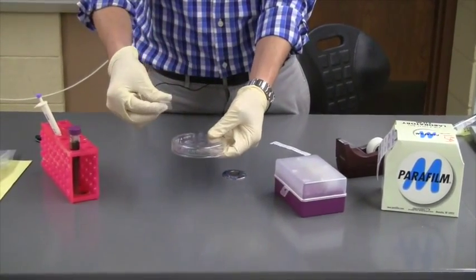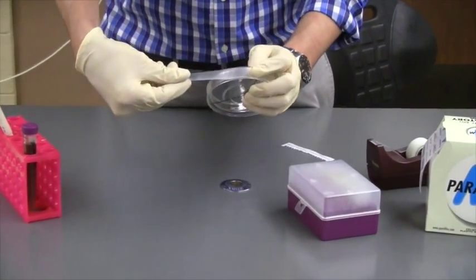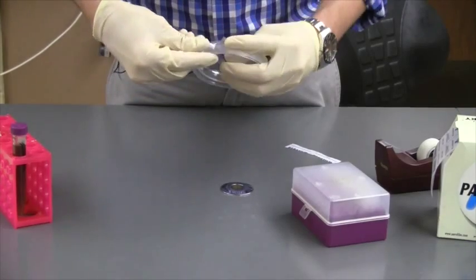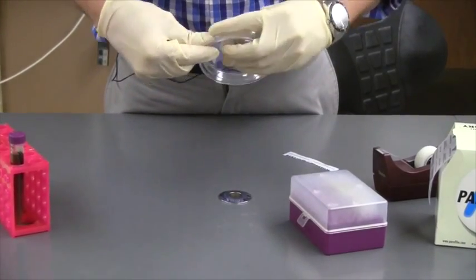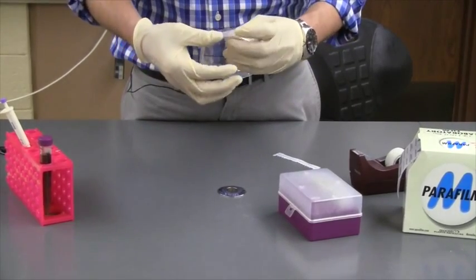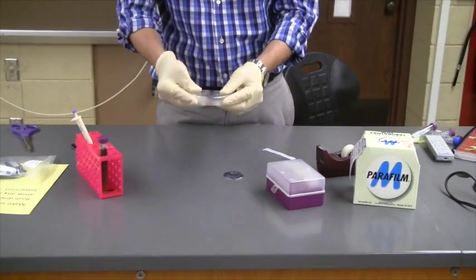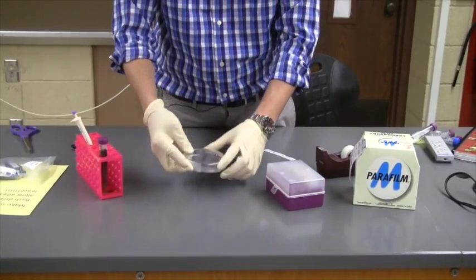It will stretch out kind of like Glad Press and Seal. Once your bacteria solution has soaked into the plate, you can take the parafilm and stretch it all the way around the sides. This will create—oh, I stretched a little too far—a nice seal. Fortunately, it's kind of sticky. A nice seal all the way around that you can use to keep the lid of your plate to the bottom of the plate.